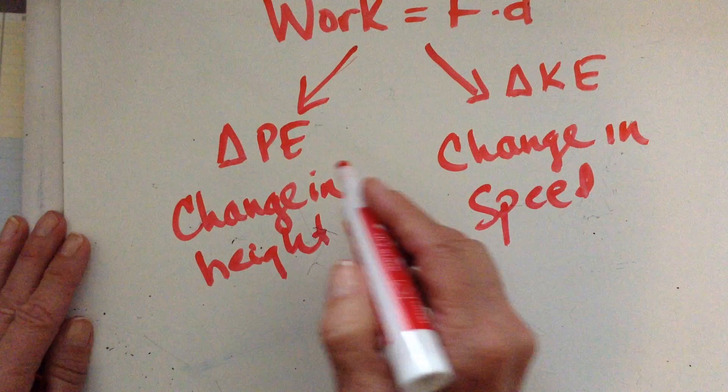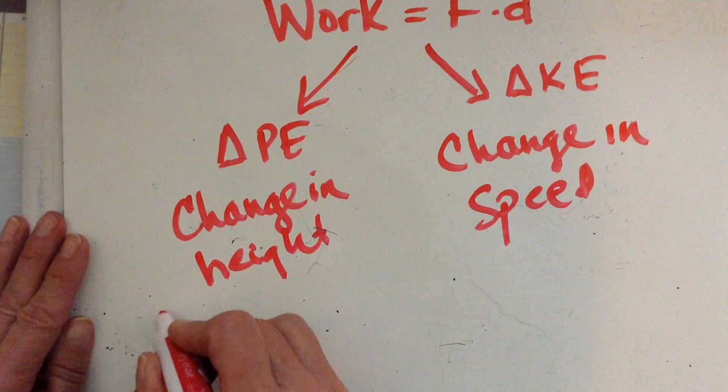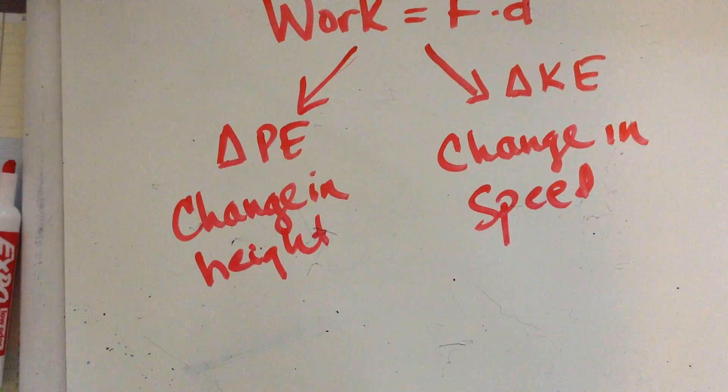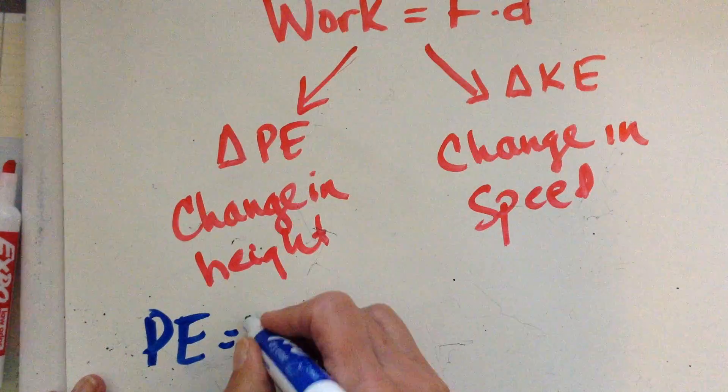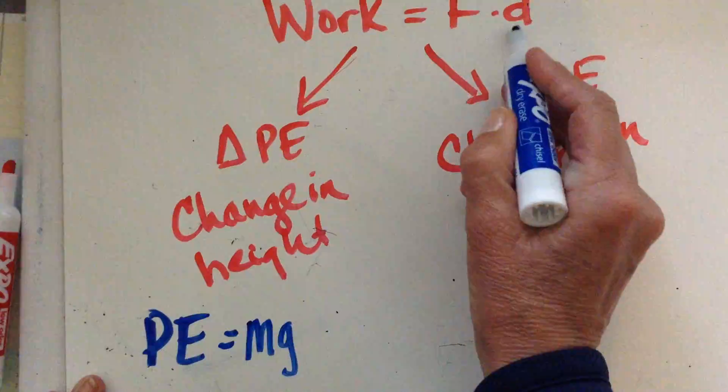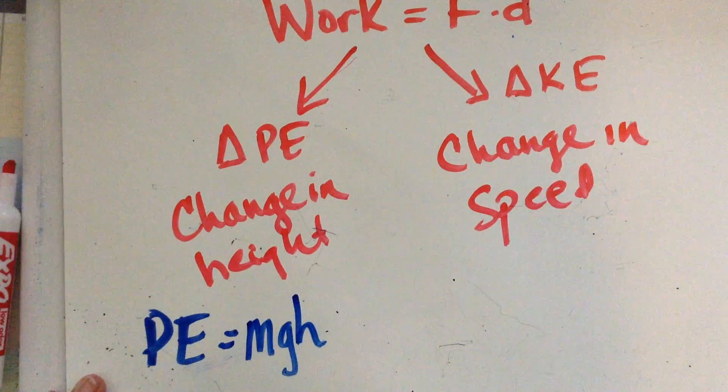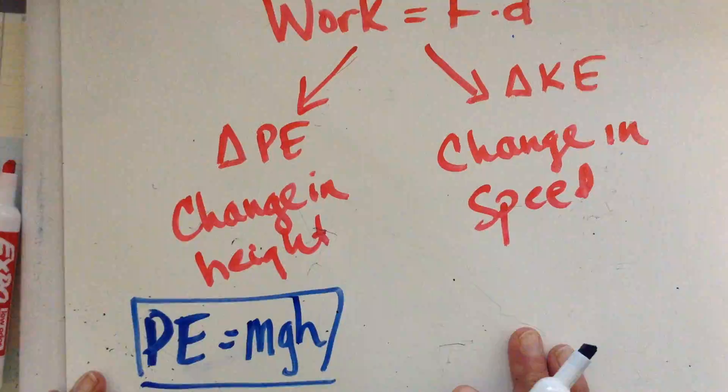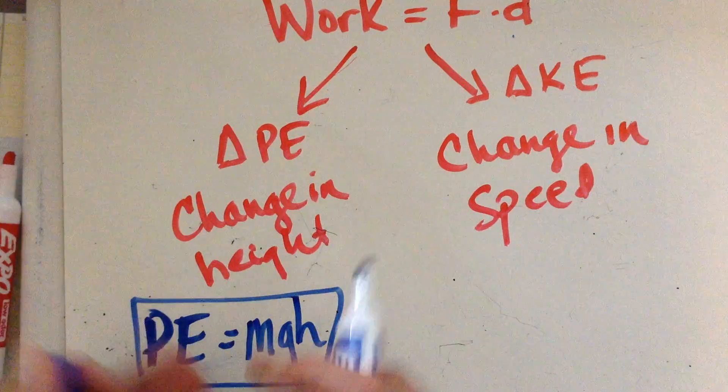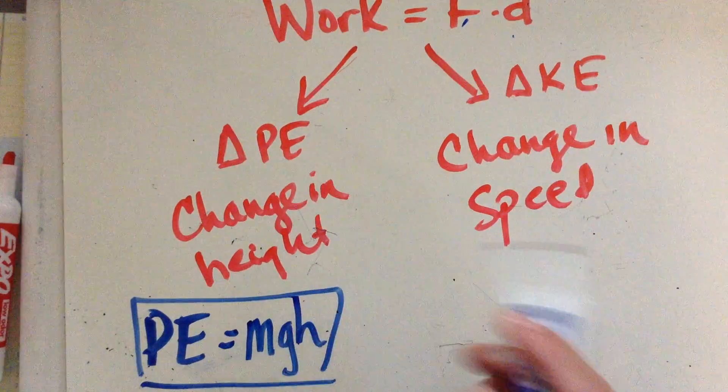So before, we looked at this formula for potential energy. I'm going to use a blue marker now. And potential energy, the force applied was equal to the weight, and that distance that it moved was equal to the height. So we have our potential energy formula. Again, none of these formulas ever have to be memorized. You just have to make connections between force and force.